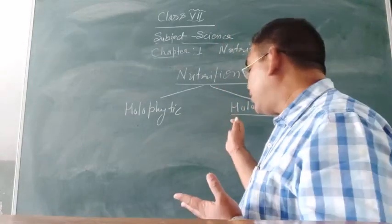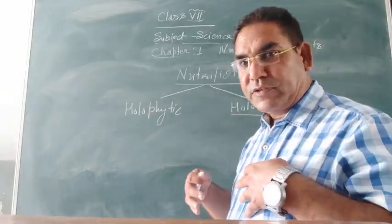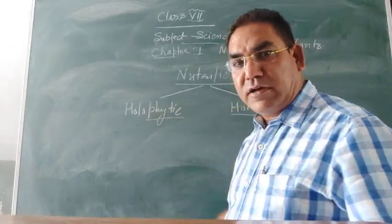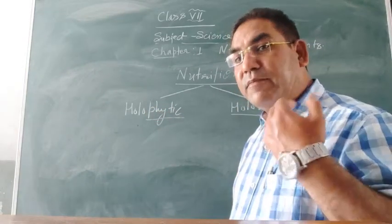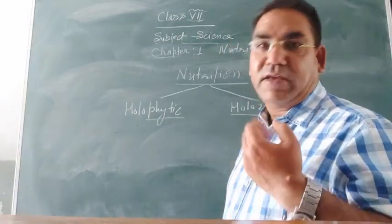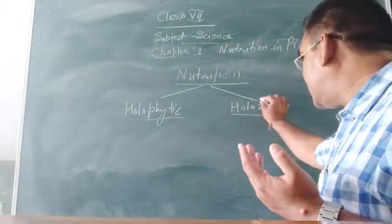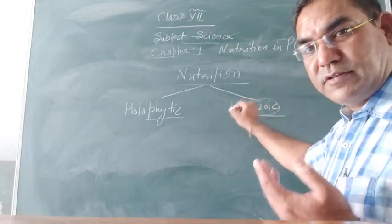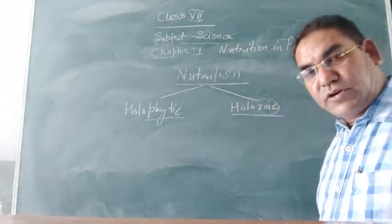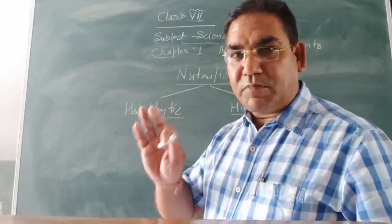Holo means complete. Phytic comes from 'phyto,' meaning plants. So holophytic nutrition generally occurs in plants. The second one is holozoic nutrition — 'zoic' means animal-like. So holozoic nutrition is animal-like complete nutrition. We are going to discuss about the plants, where 'phytic' refers to plants and 'zoic' refers to animals.